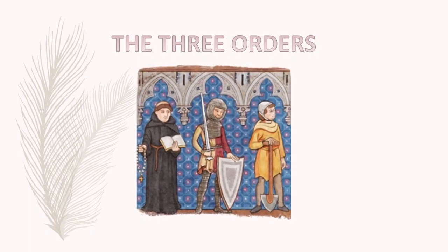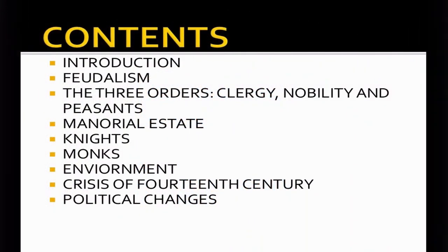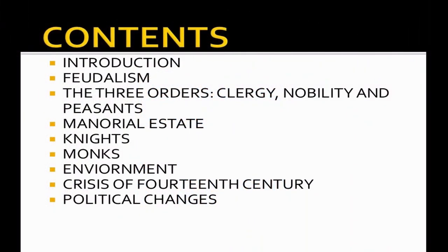This is the next chapter of the three orders in the 11th class history series. Talking about the contents: the introduction, feudalism, the three orders, clergy, nobility and the peasants, manorial estate, knights, monks, environment, crisis of the 14th century, and the political changes.